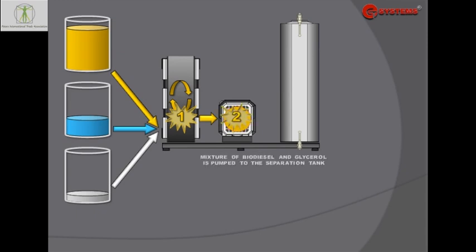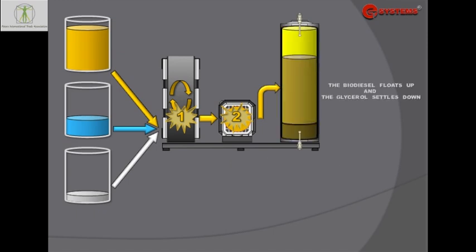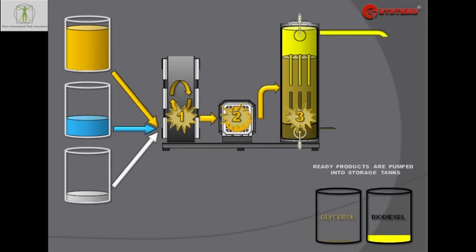Mixture of biodiesel and glycerol is pumped to the separation unit. The biodiesel floats up and the glycerol settles down. The sensors control the separation process. Ready products are pumped into the storage tanks.